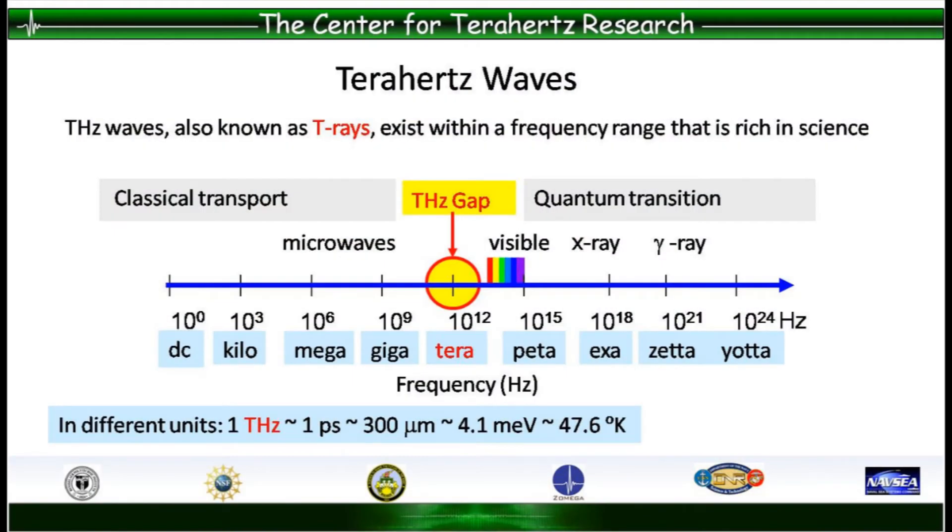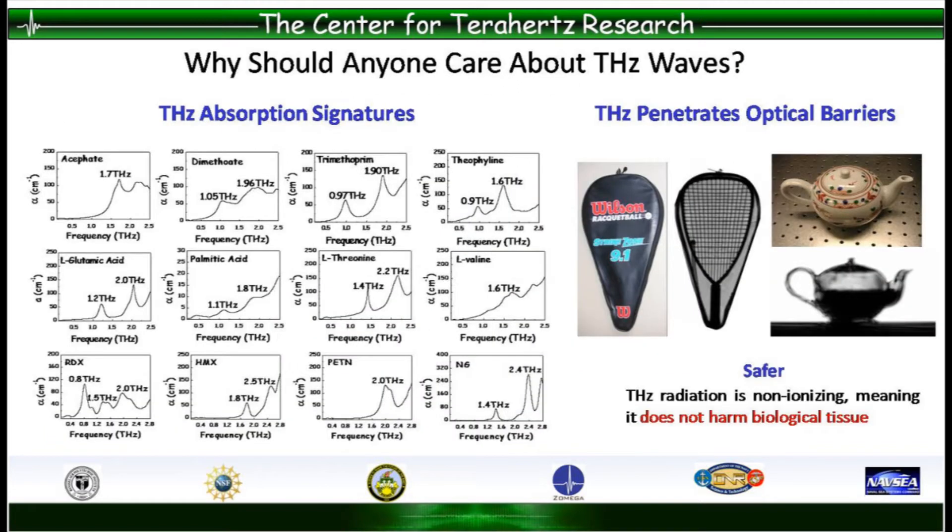Terahertz waves, also known as T-rays, are located between microwaves and visible light. So why should anyone care about terahertz waves? Three main reasons are: signatures, the ability to penetrate optically opaque materials, and safety.